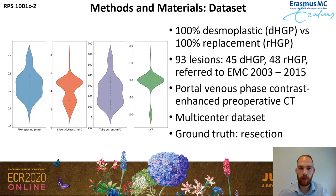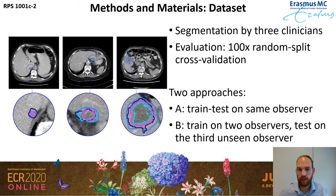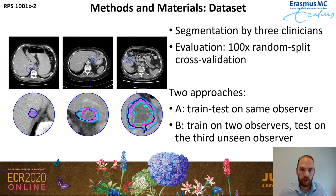In our dataset, each lesion was segmented by three different clinicians. In our experiments, we use a 100-times random split cross-validation to ensure the model is trained and tested on different sets of patients. We have two approaches. In the A models, we train and test on the same observer, using segmentations from one observer in both the training and test sets. In the B models, we use segmentations from two observers for training patients and segmentations from a third unseen observer on the test patients, to see how well the model performs when a different radiologist segments the tumor.